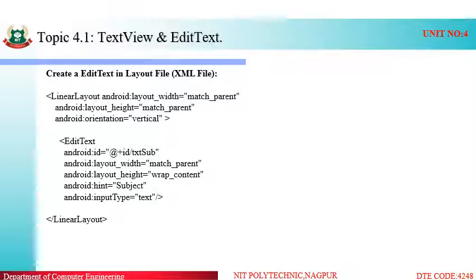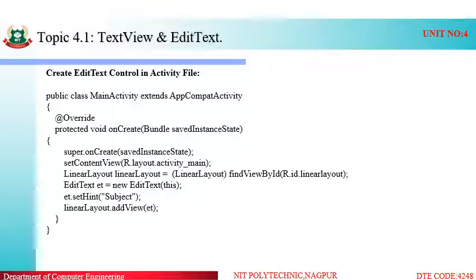In the XML file, we can include EditText inside the linear layout, giving attributes such as layout width, layout height, and hint — for example, hint set to 'subject', so the user enters a subject. The inputType is set to text, meaning the user can enter input as text. Similarly, we can create it inside the activity file: we create an EditText object et equals new EditText(this), which references the current instance. Then et.setHint('subject') sets the hint, and then we add it to the linear layout.